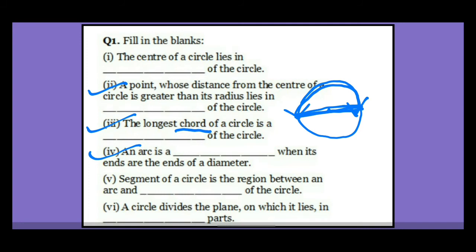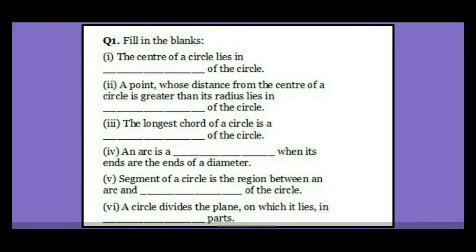Fifth point: segment of a circle is the region between arc and dash of a circle — the answer is chord. The last question is: a circle divides the plane on which it lies into dash parts.